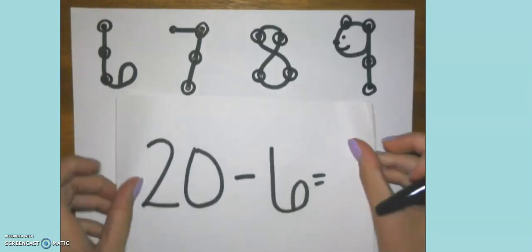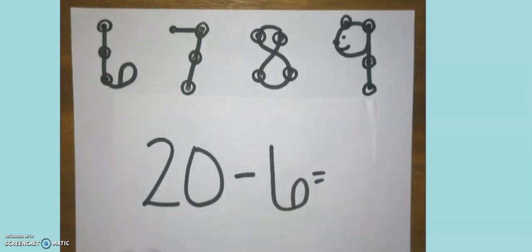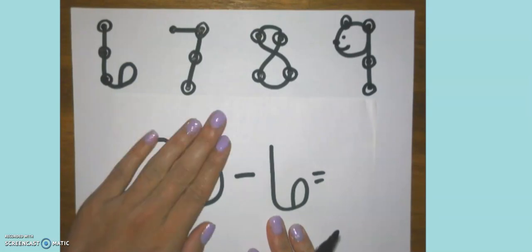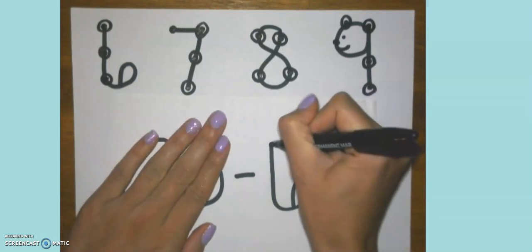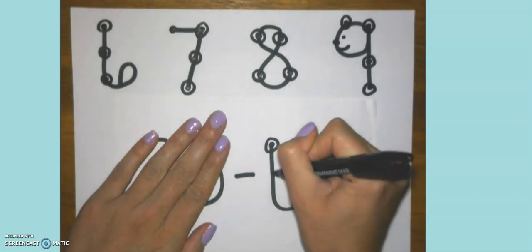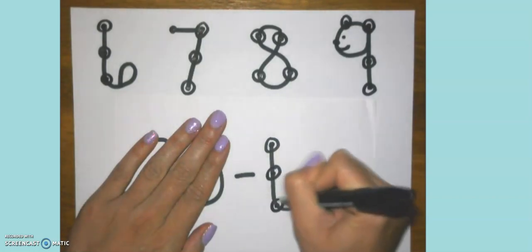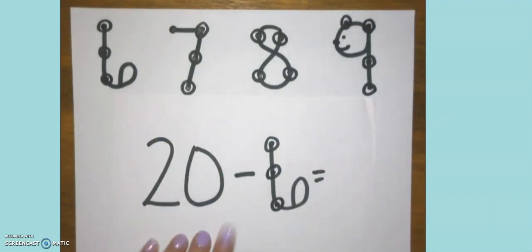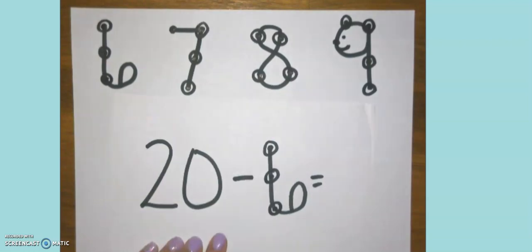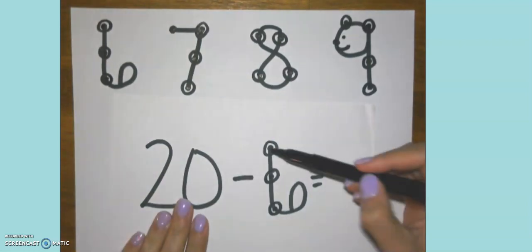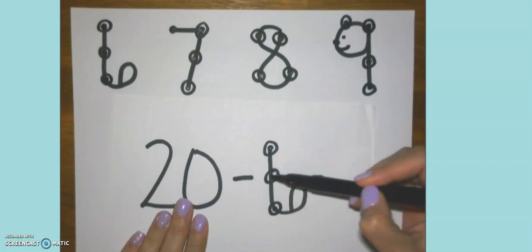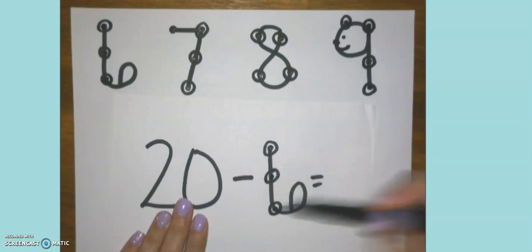Here's our last example problem for today, 20 minus 6. 20 is larger, so I'm going to cover it up: 1, 2, 3, 4, 5, 6. Now I'm counting down again since I'm subtracting: 20, 19, 18, 17, 16, 15, 14. And that's it.